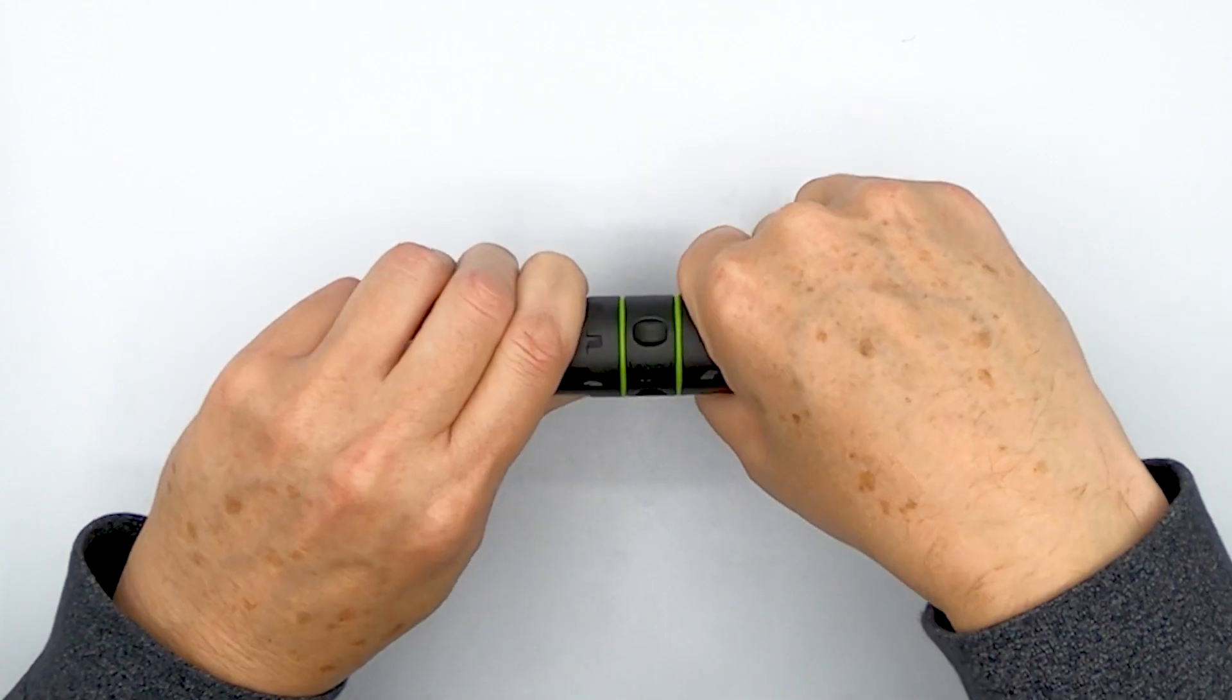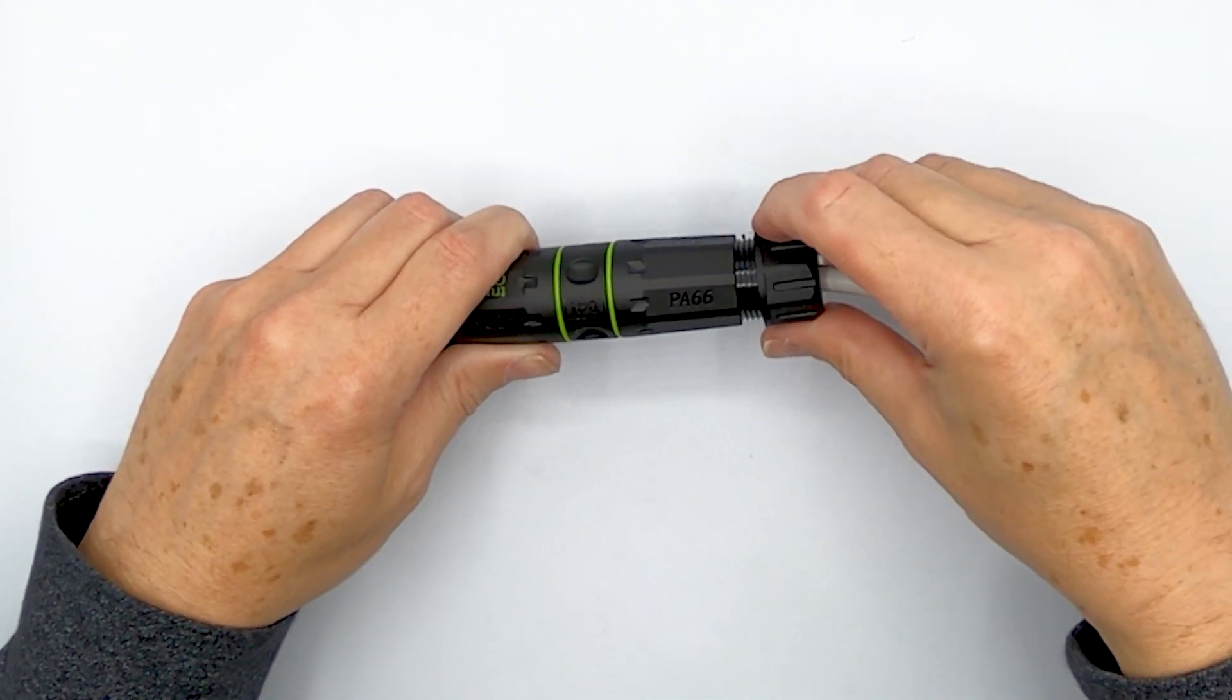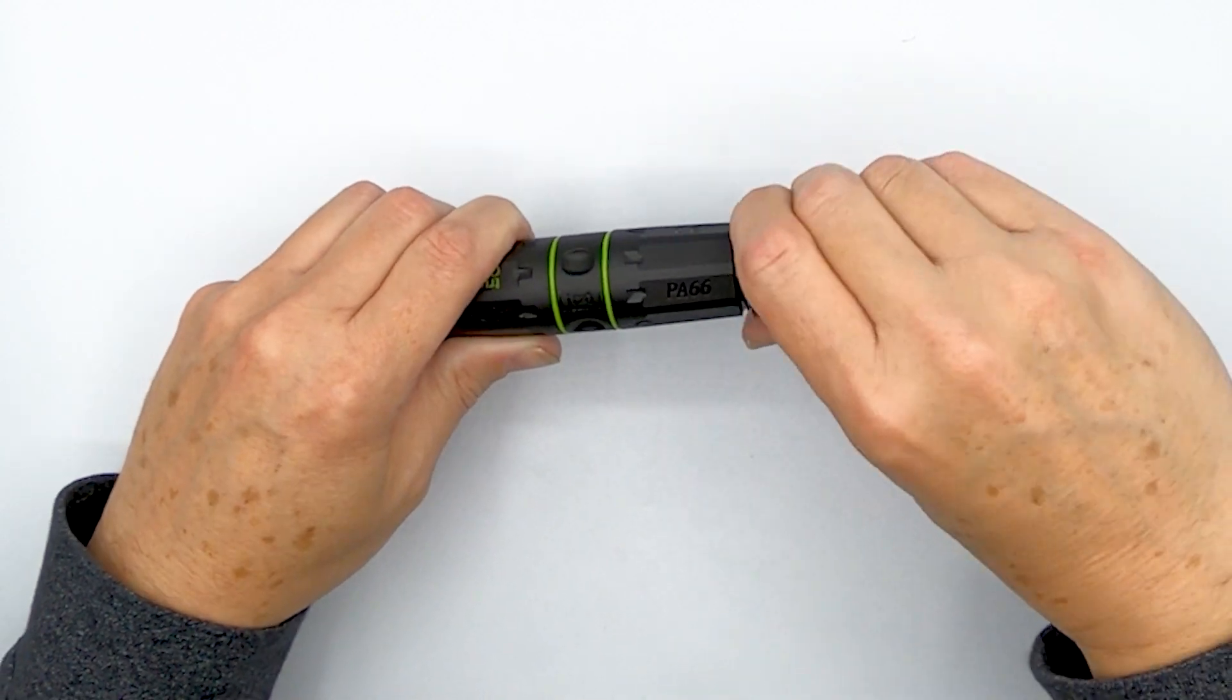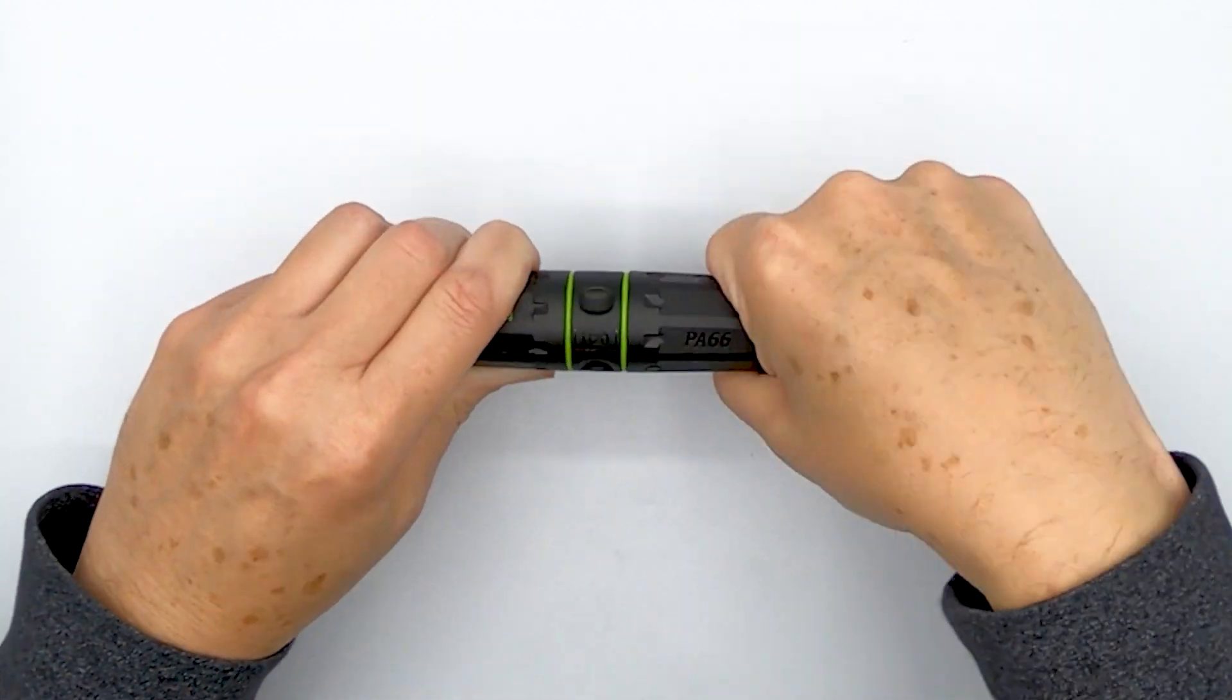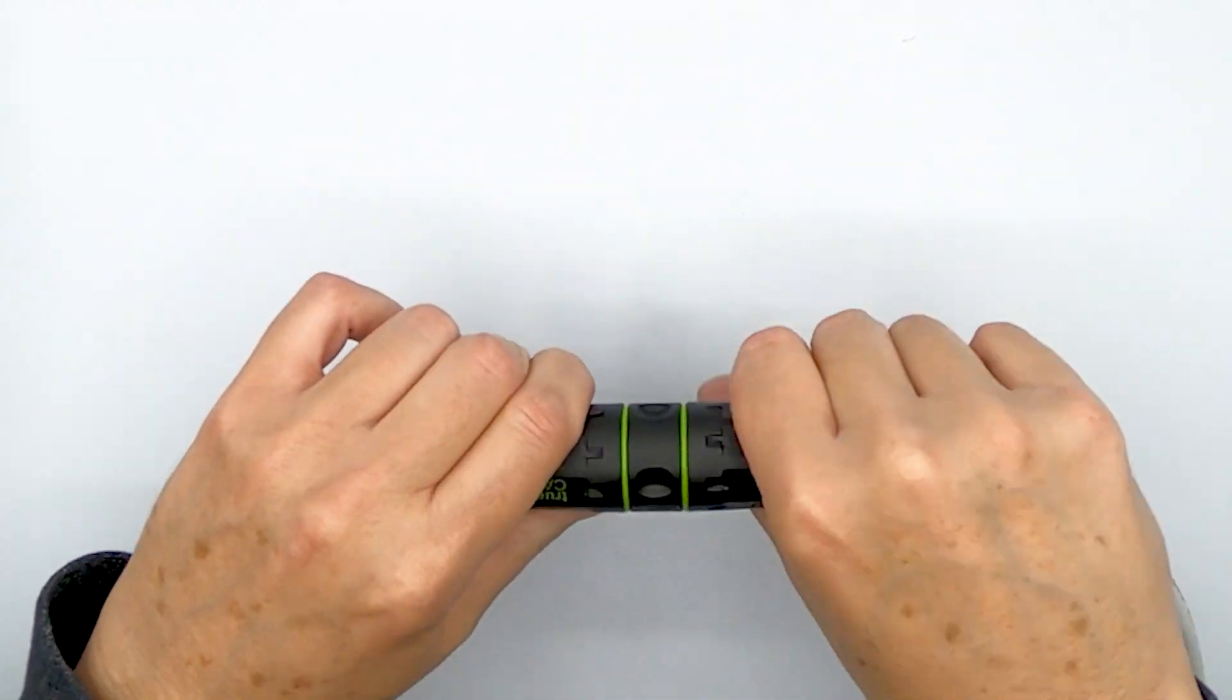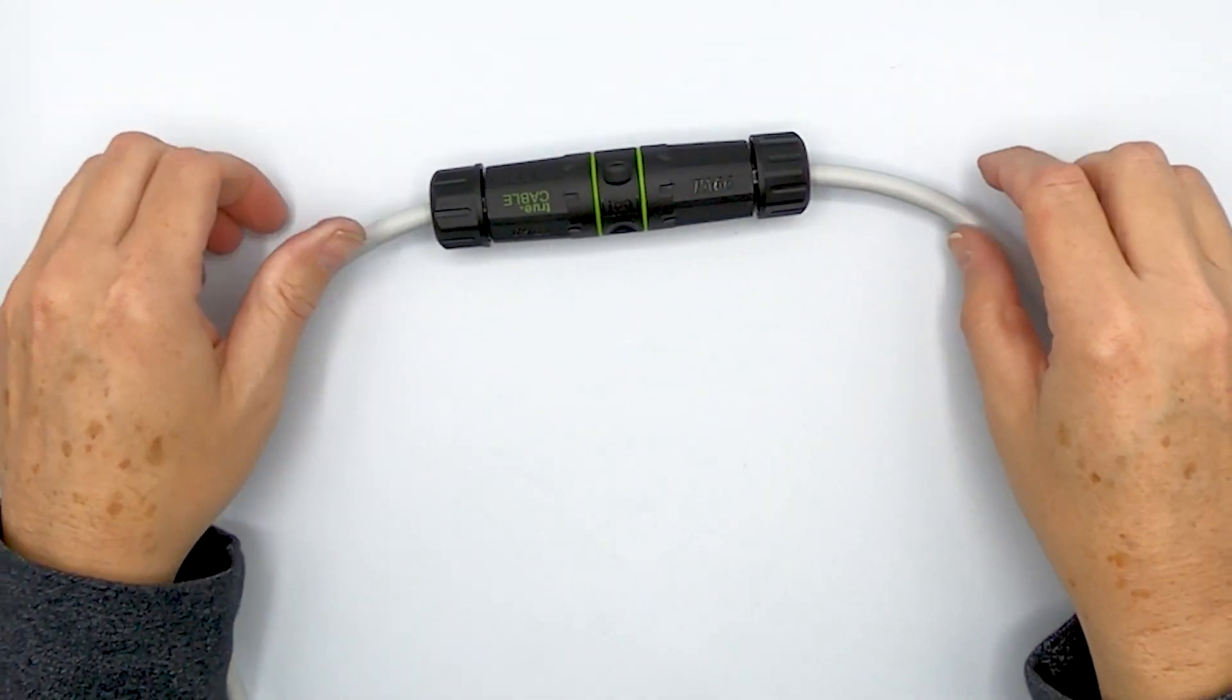And then bring up the main housing and screw that so it's making contact with that O-ring. And again, just finger tight is fine. And then go ahead and continue screwing this until it is finger tight as well. There we go. And it's done.